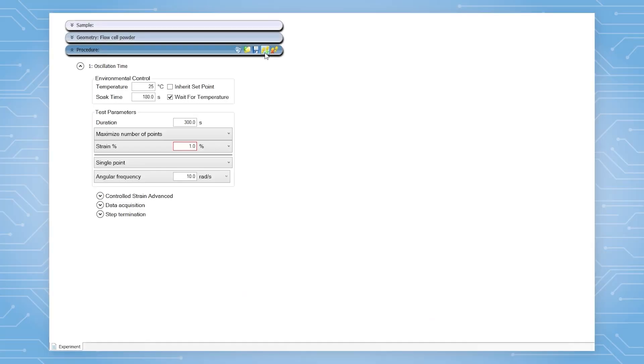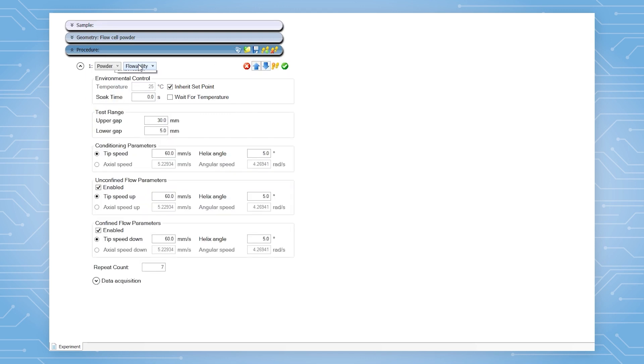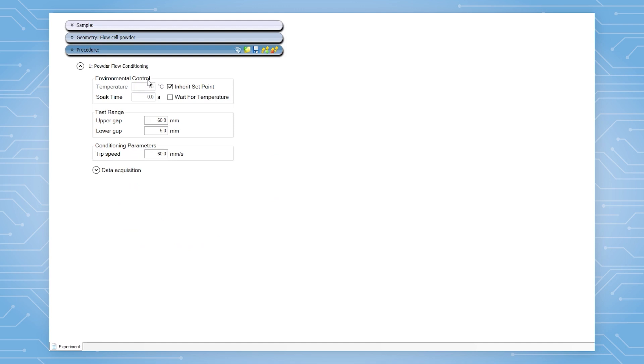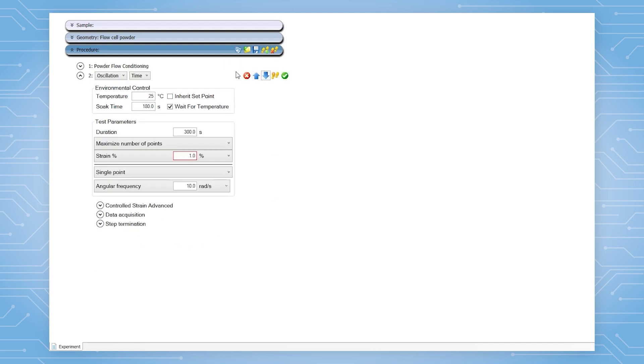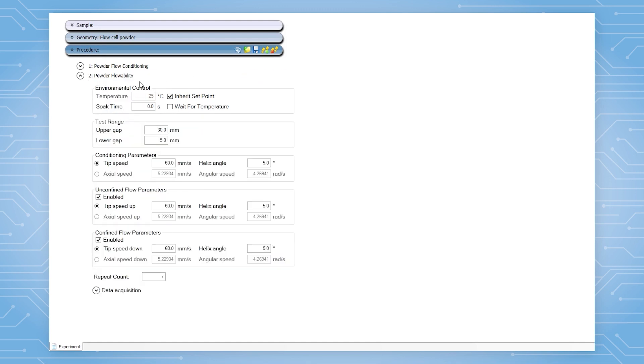To set up a powder flow test, navigate to the experiment tab in TRIOS. Select powder in the test type drop down menu. This type of test will only be displayed if a powder geometry is installed. The first step is powder flow conditioning and the second step is powder flow ability.